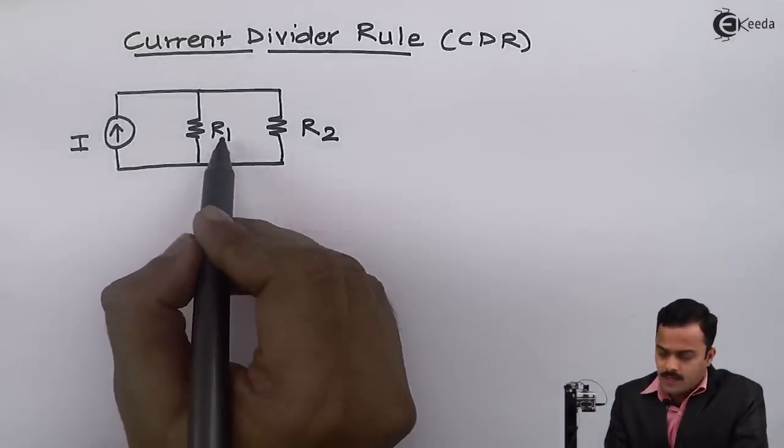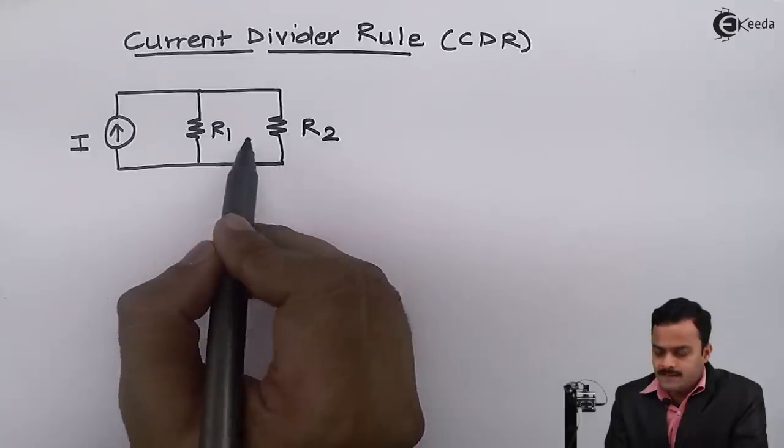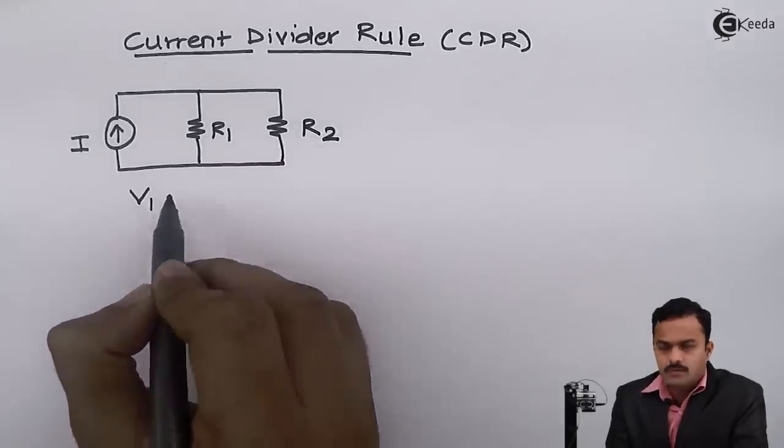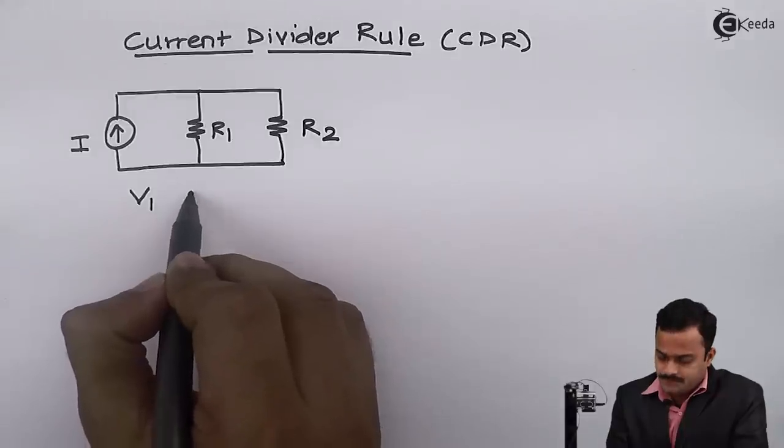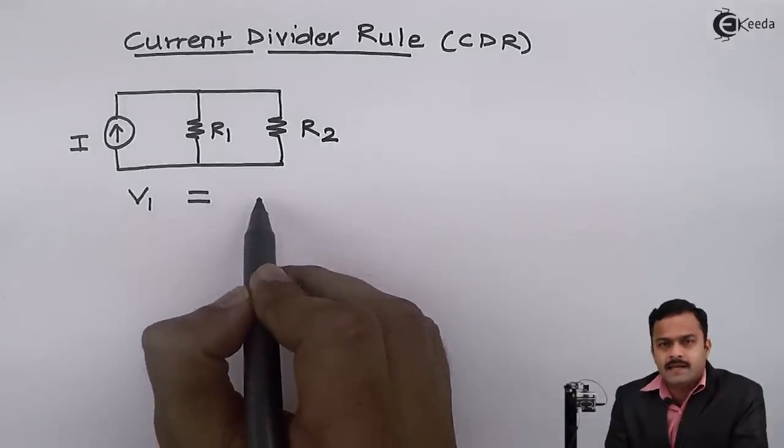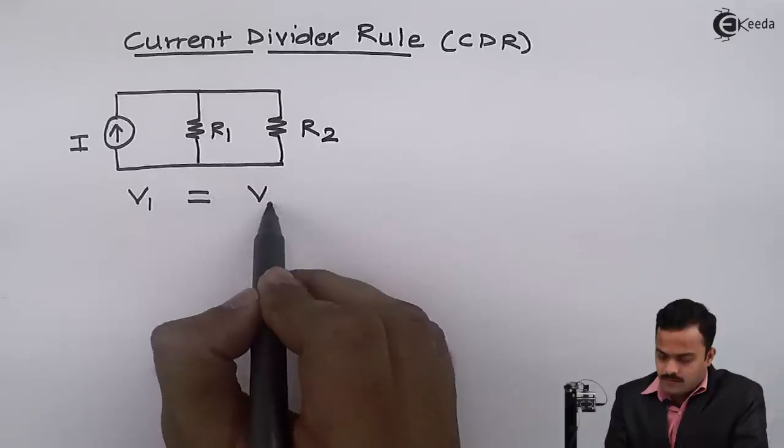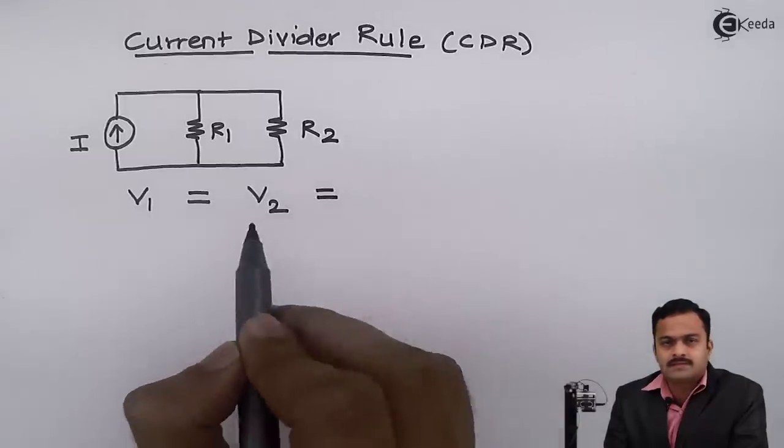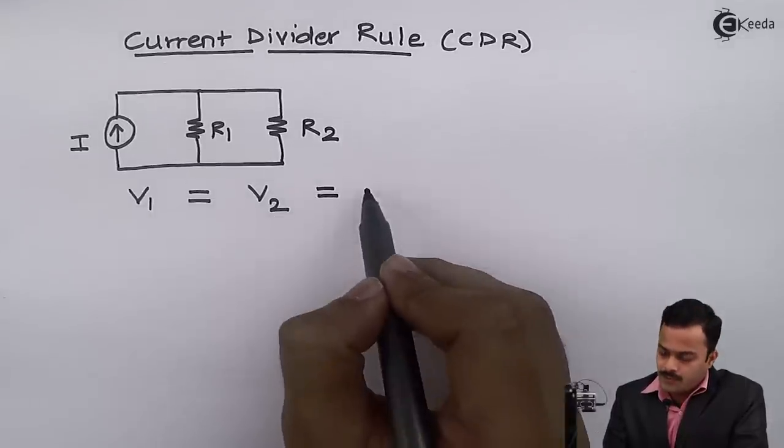Since R1 and R2 are connected in parallel, I can say voltage across R1 is the same as voltage across R2, which is the same as the total voltage applied to the circuit.